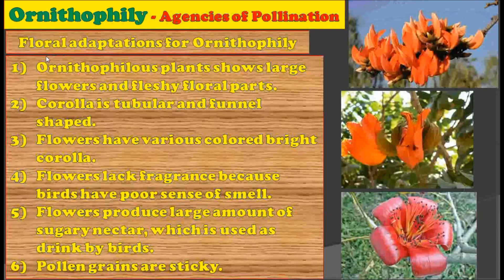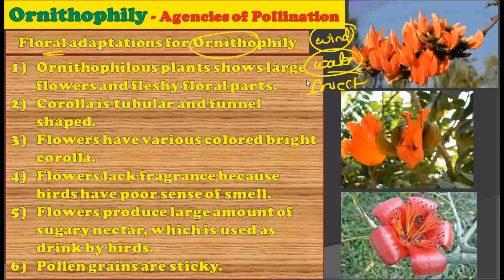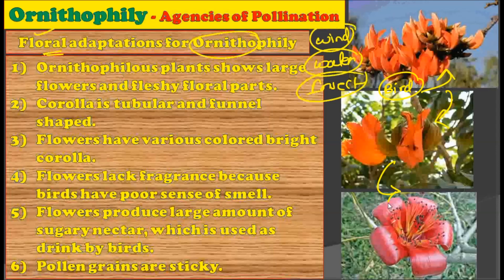Let us consider what are the floral adaptations in ornithophily. Since the last three lectures, we have seen that certain kinds of flower modifications are needed to achieve pollination — wind-pollinated, water-pollinated, and insect-pollinated flowers all show different adaptations. In a similar way, ornithophilous plants show adaptations for ornithophily, because getting pollinated by birds requires certain changes in the flower to attract birds.